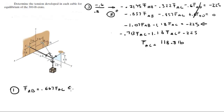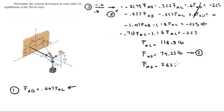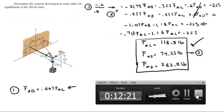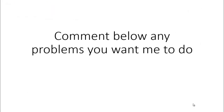Plugging FAC = 118.8 lb back into FAB = 0.667 FAC gives FAB = 79.23 pounds. Substituting both into Equation 2 and solving gives FAD = 282.8 pounds. These are the three cable tensions required to sustain the 300-pound crate in equilibrium.